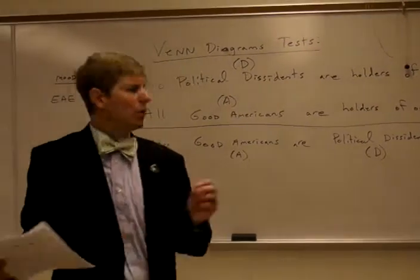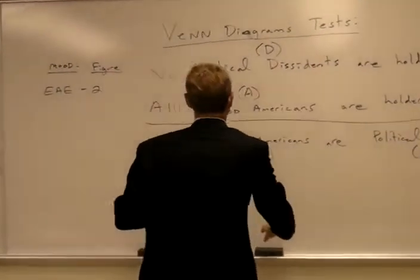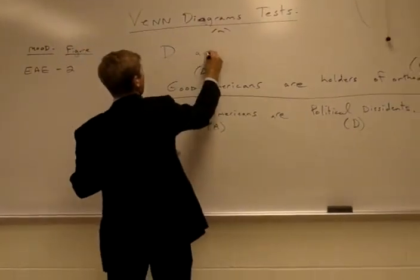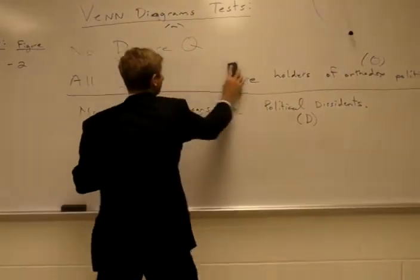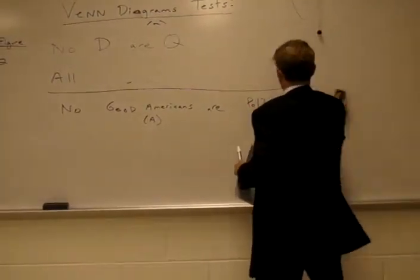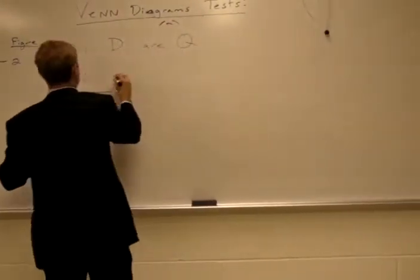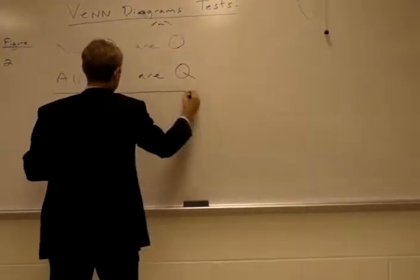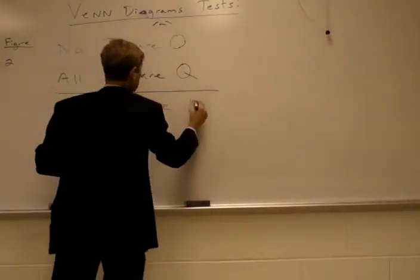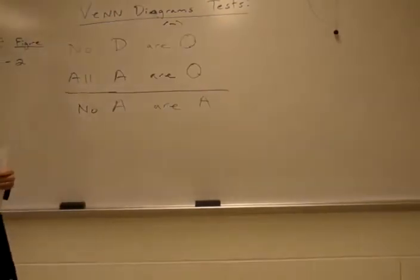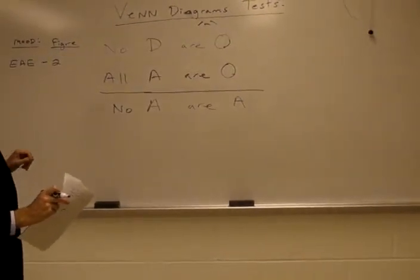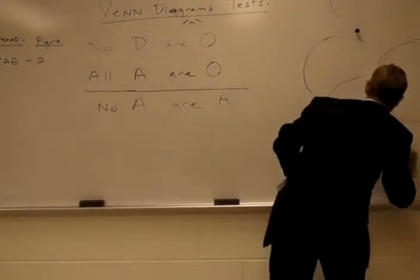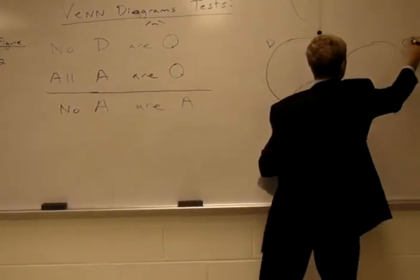Now, how do we diagram this? I'm going to simplify the notation — 'No D are O' — partly to make plenty of space to do our diagram. So here we are with an E, A, E, figure-two syllogism. We're going to draw our three overlapping circles as before, labeled D, O, and A.